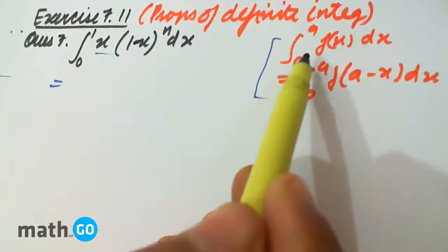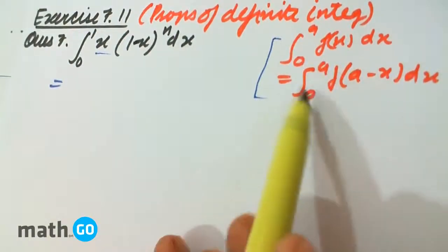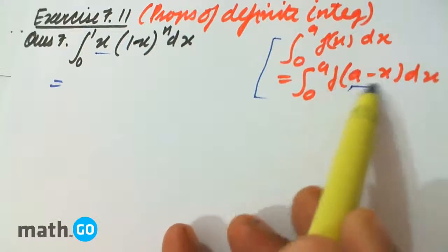It says if the integral from 0 to a of f(x)dx is equal to the integral from 0 to a of f(a-x)dx.